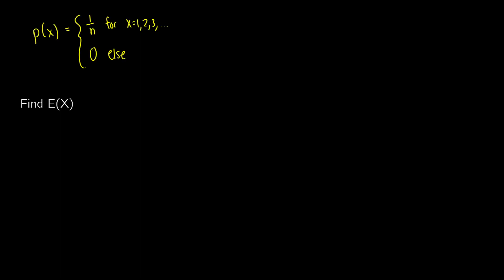Now here's another one. Let's say that the probability of x is equal to 1 over n, where x is equal to 1, 2, 3, and so on, and it's going to be 0 else. So we're going to do the same thing here. We're going to take the sum from x to infinity of x times p(x), but here we know what our p(x) is. It's going to be 1 over n.